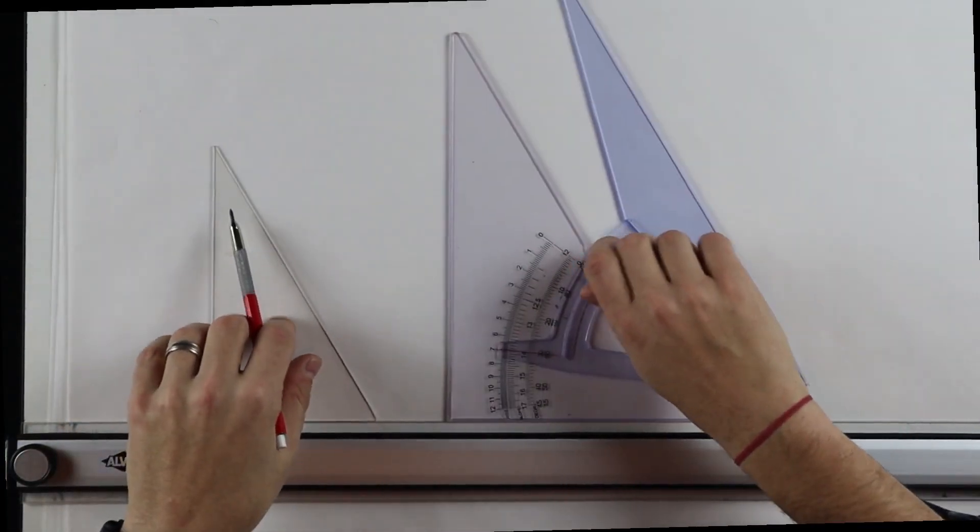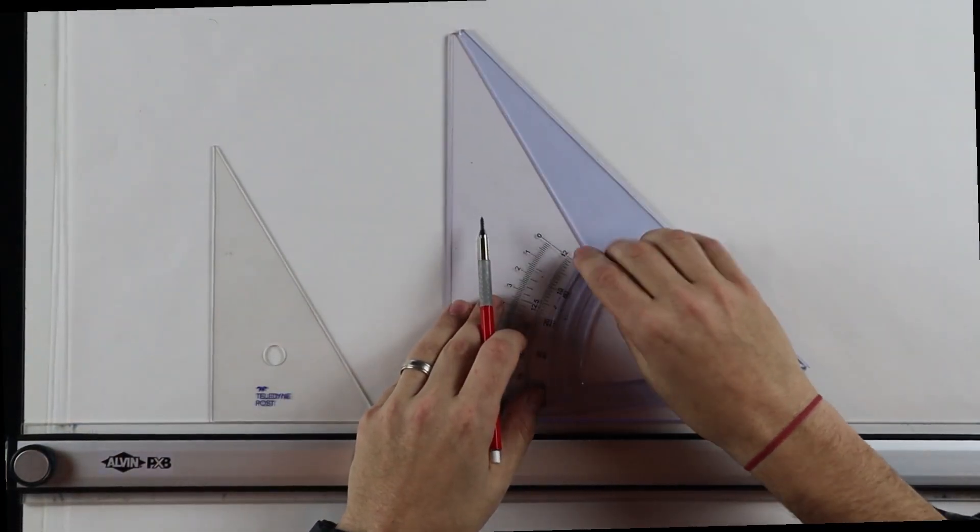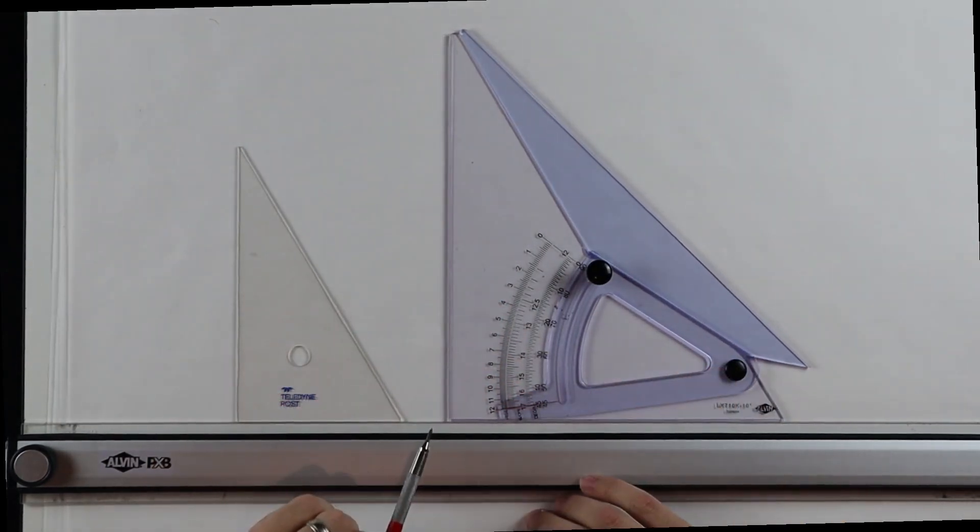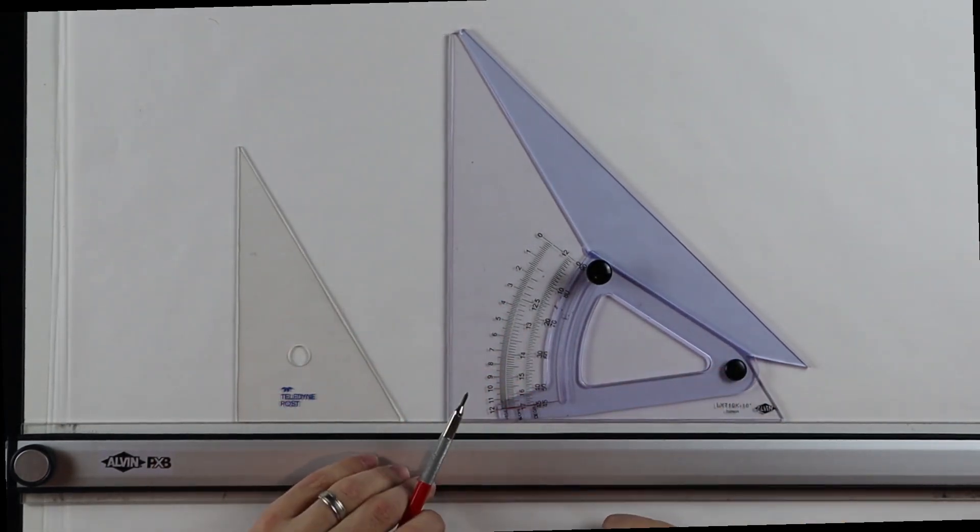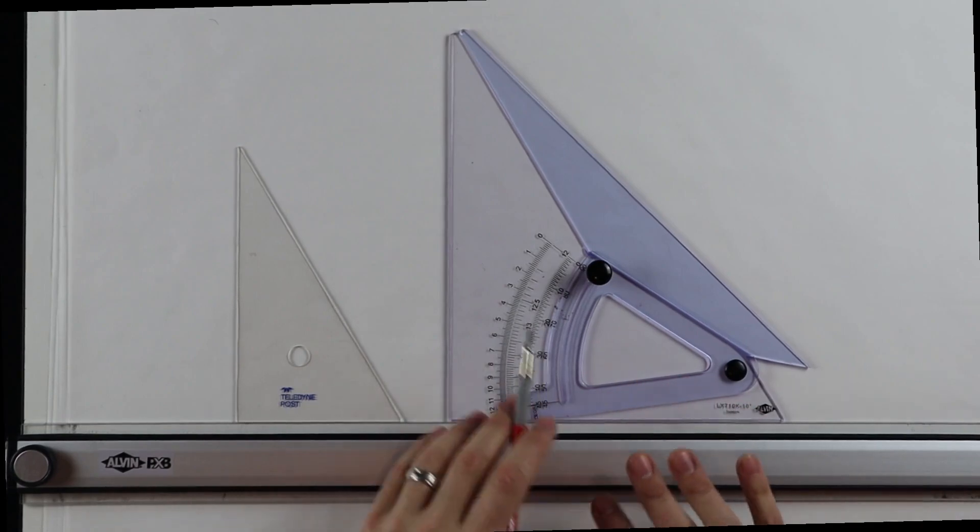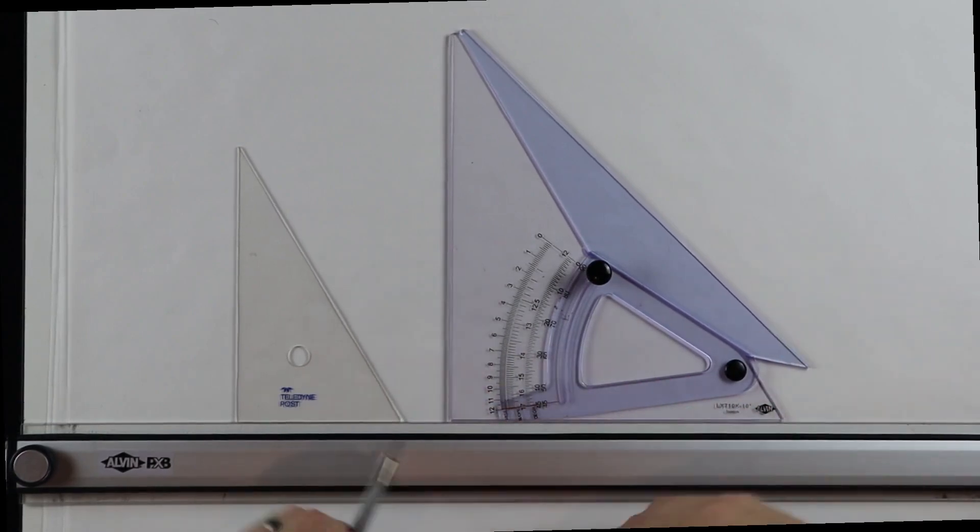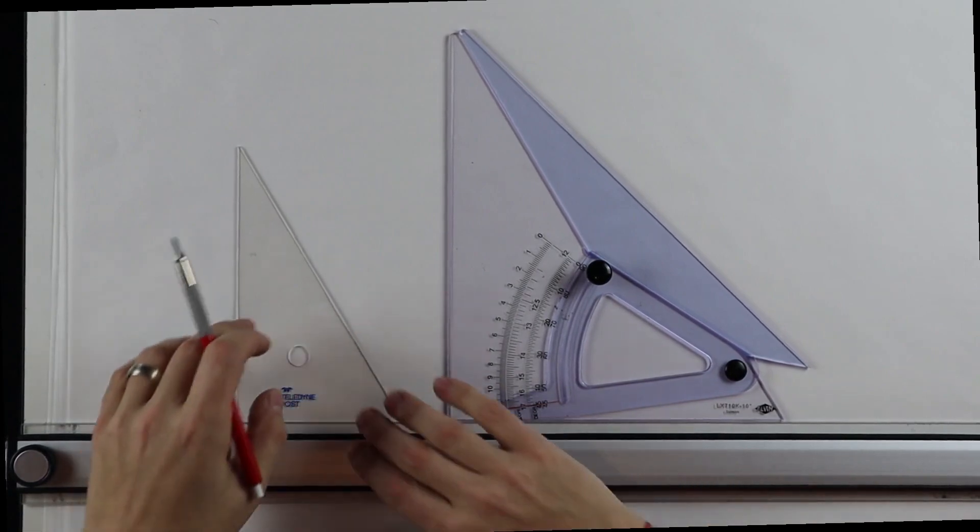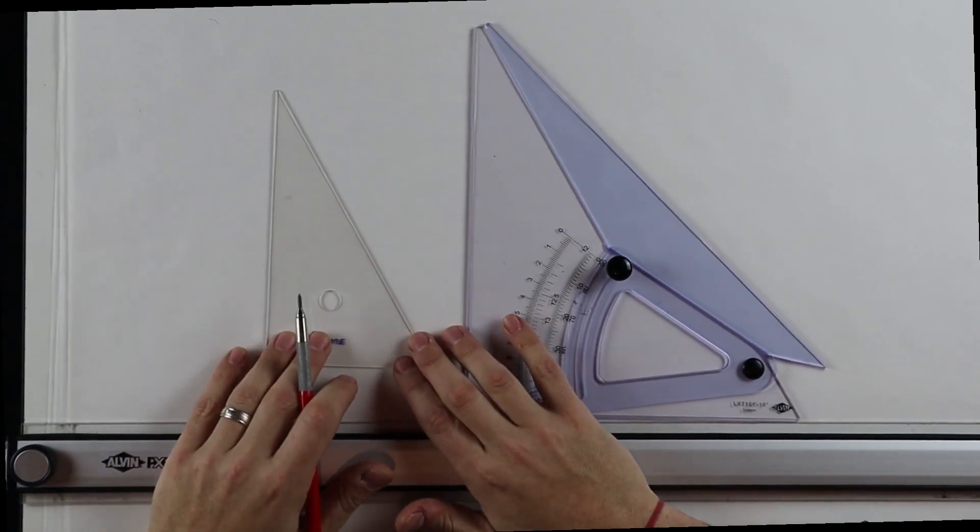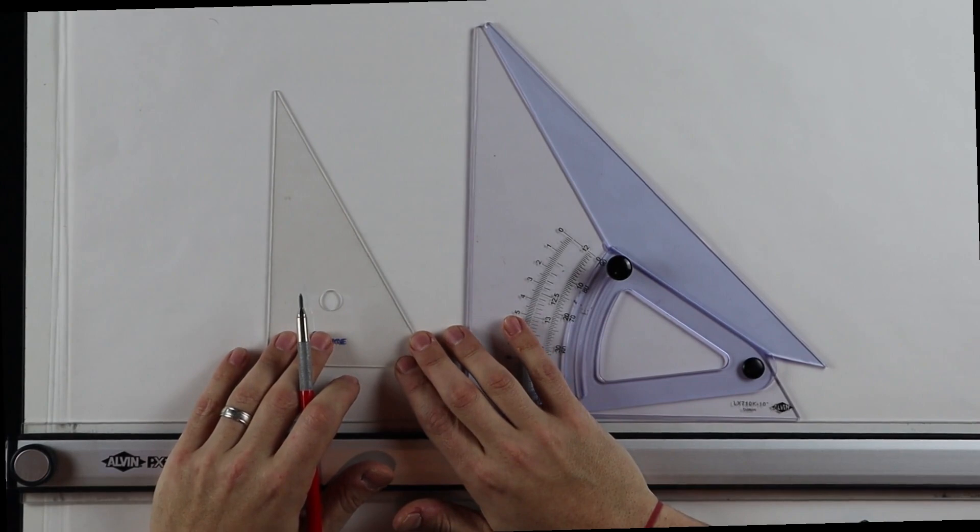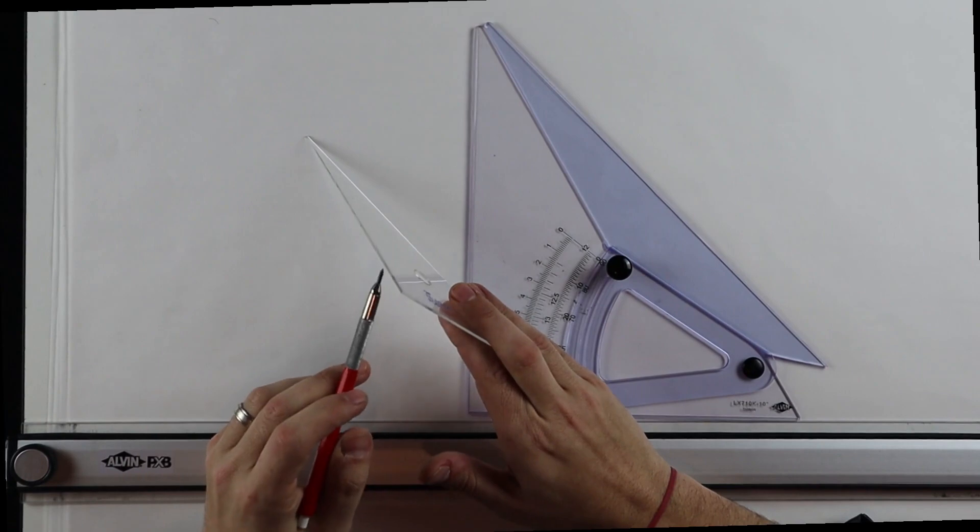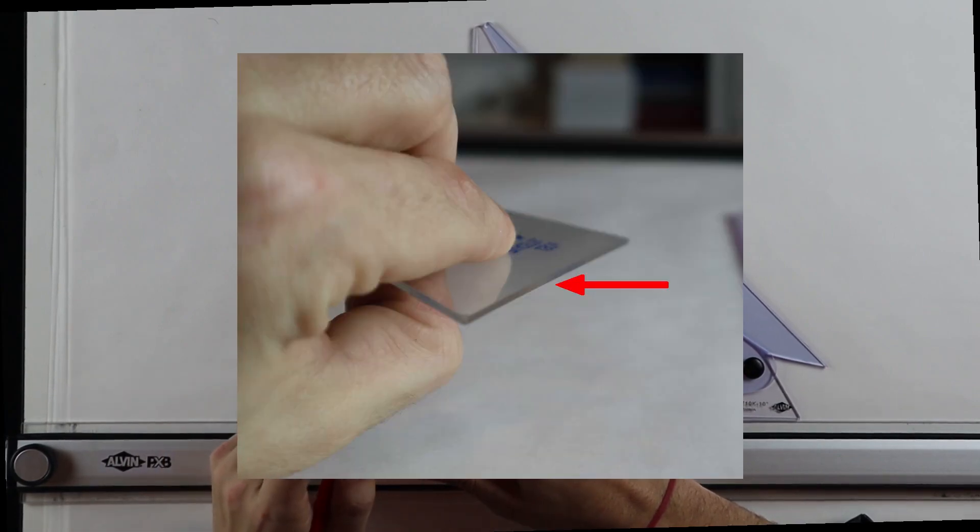Another nice thing about the adjustable triangle is that it comes with beveled and non-beveled edges. Now why might that be important? So the one that I have is just a standard set square from Alvin, I'll link in the description below, but it comes with a beveled edge. This one, which is an older drafting triangle that I purchased a while ago, is a non-beveled edge.